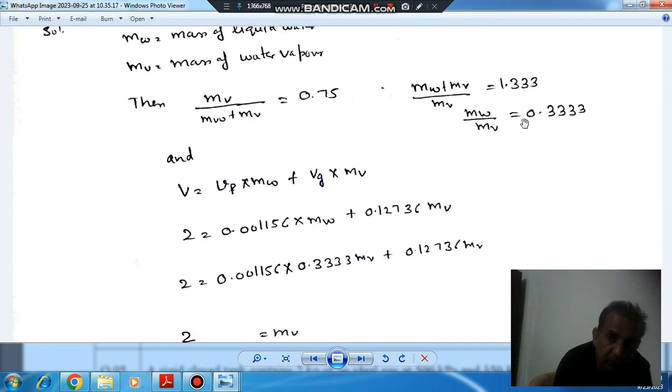The ratio mw and mv we have obtained. So putting the value of mw as 0.32 times mv, mv comes out as 25.127. Since mv by m is 0.75, this is the total mass. So m can be calculated as 2 divided by 0.75.